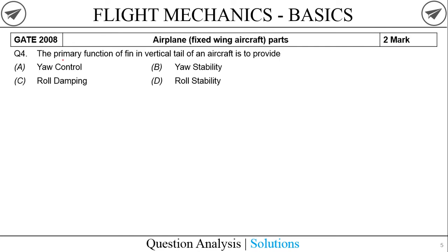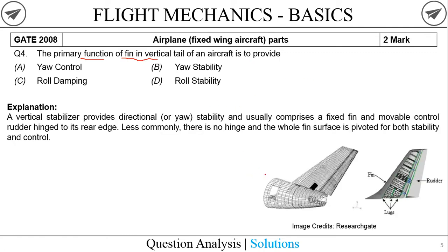Moving on to a two-mark question from GATE 2008: what is the primary function of the fin in the vertical tail of an aircraft? Looking at the tail of an Airbus A320, the tail portion consists of two components: the fixed portion, which is known as the fin, and the rear movable portion, which is the control surface called the rudder. Since the fin doesn't move, it cannot provide any kind of control.